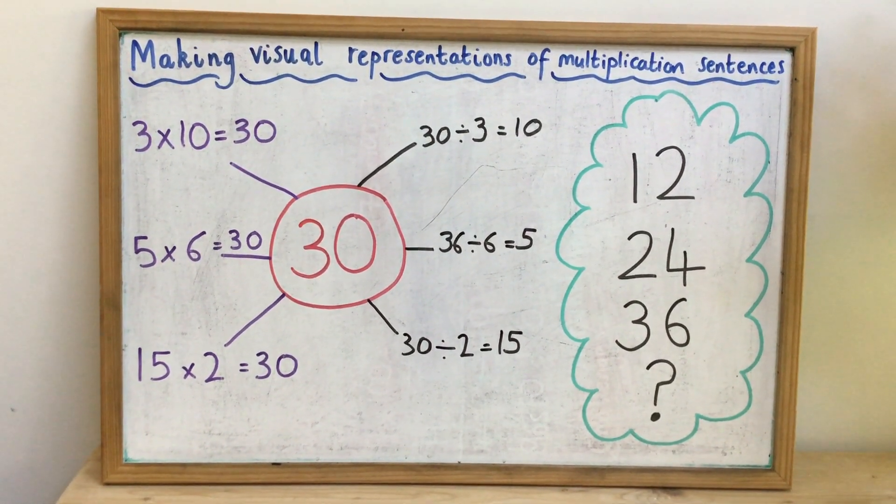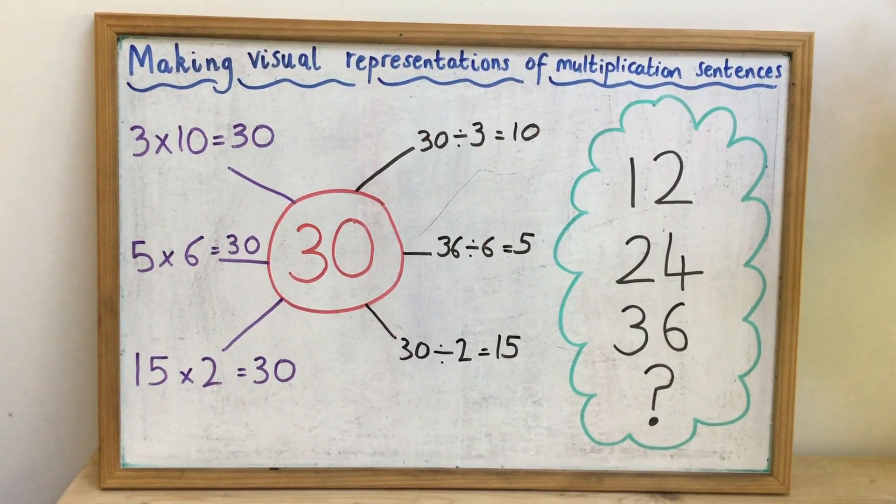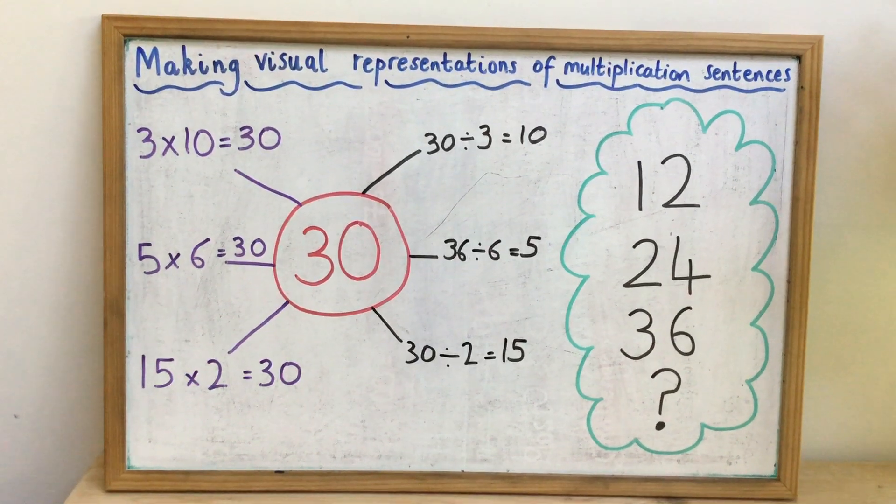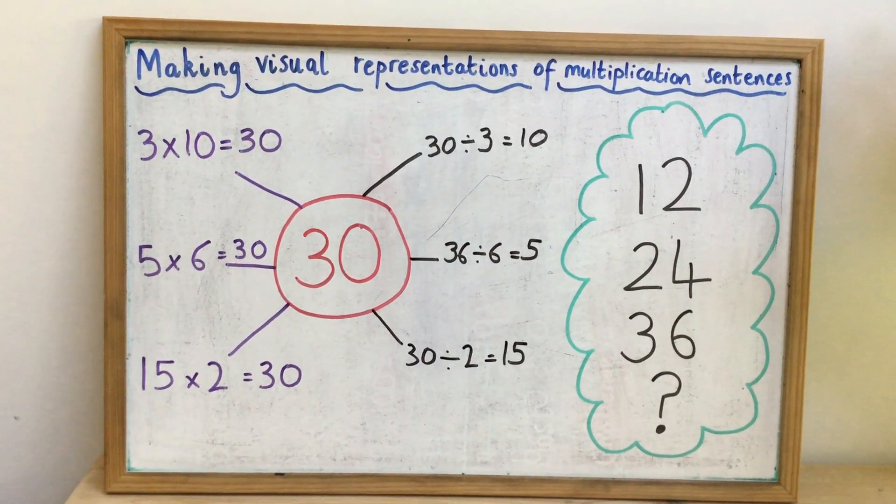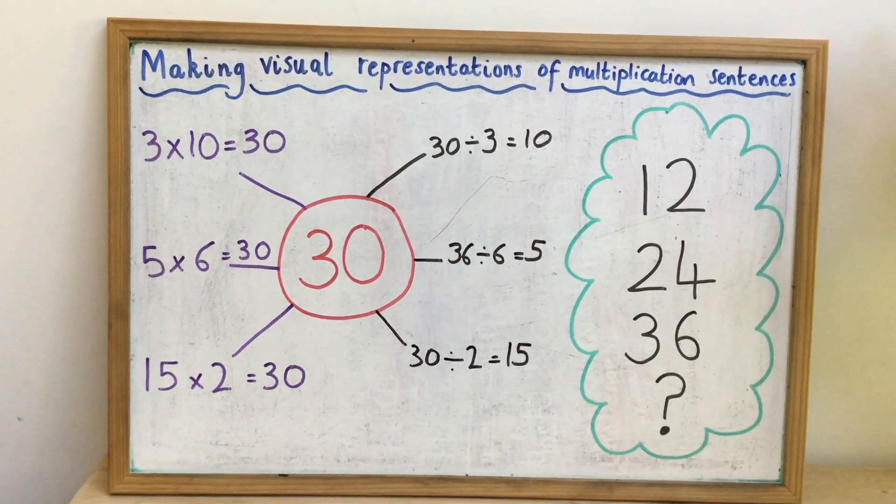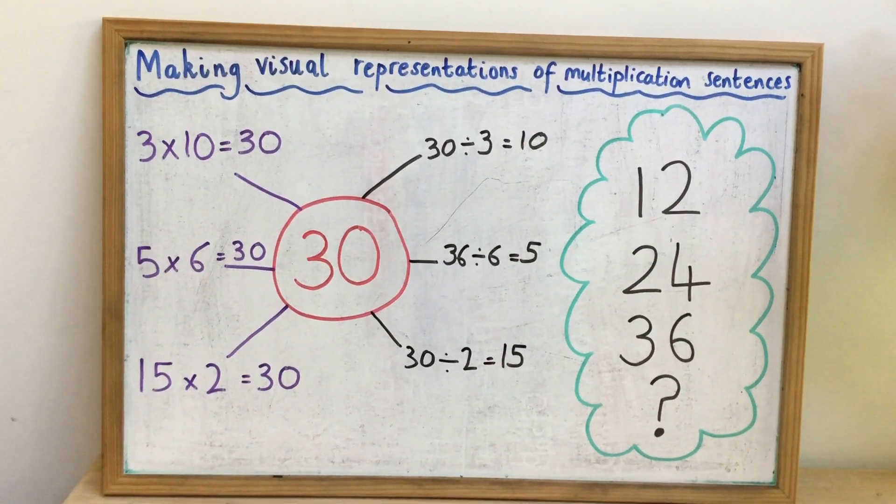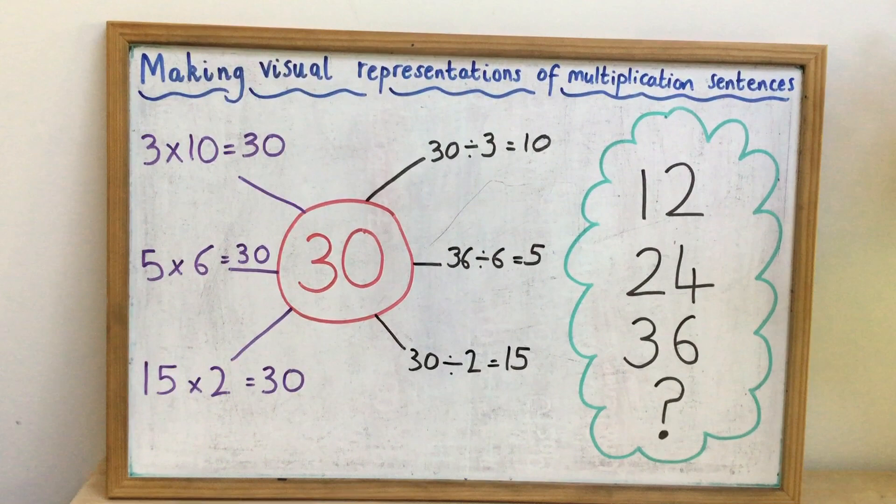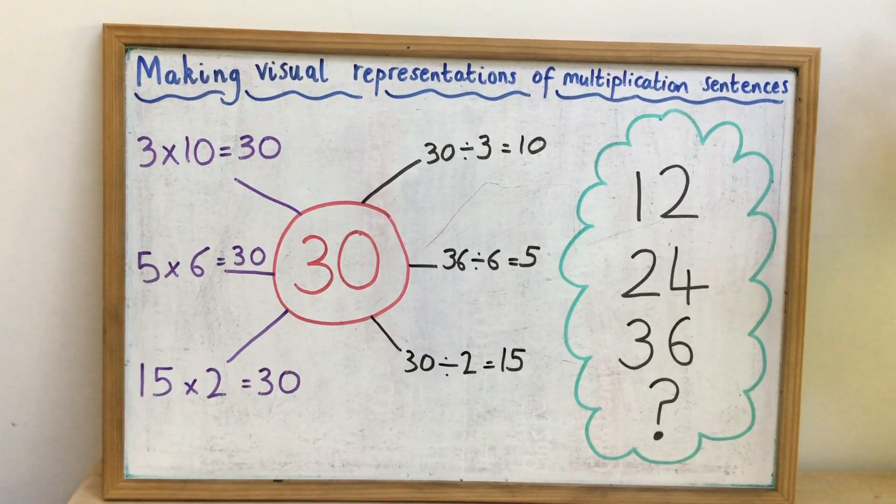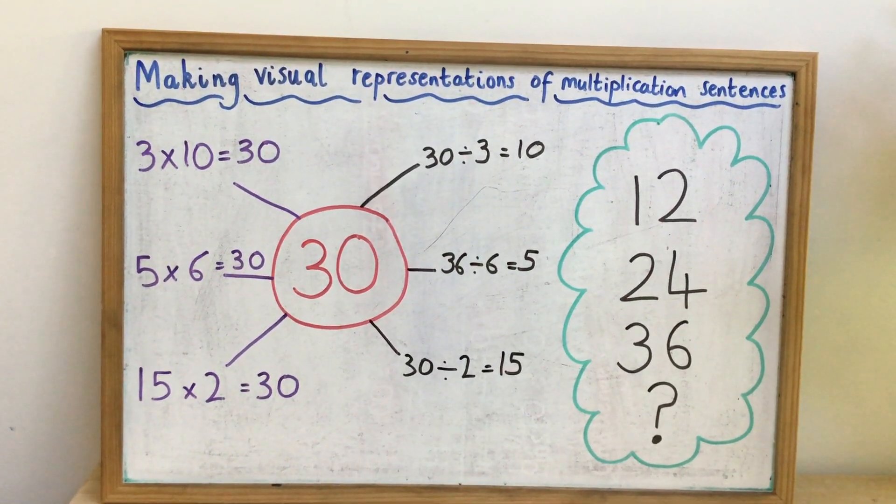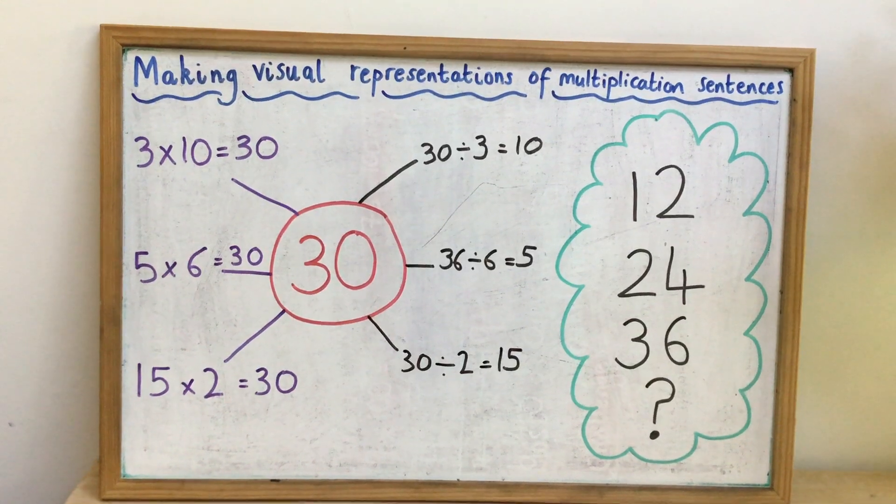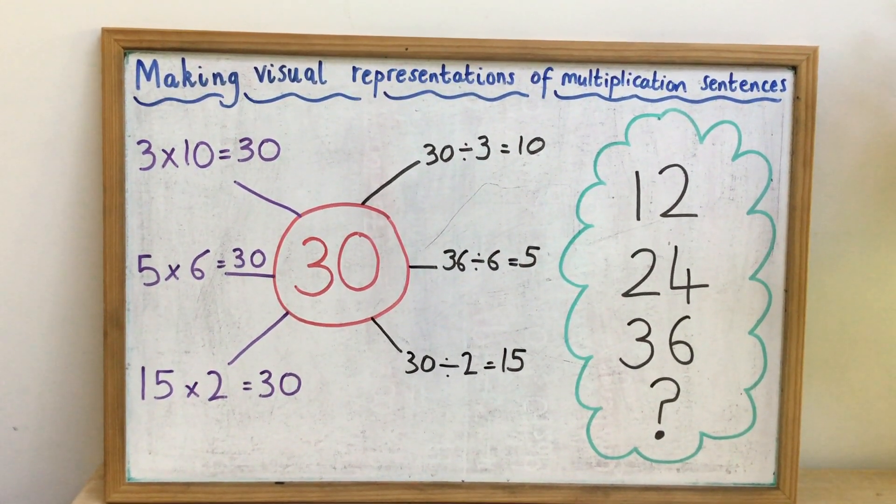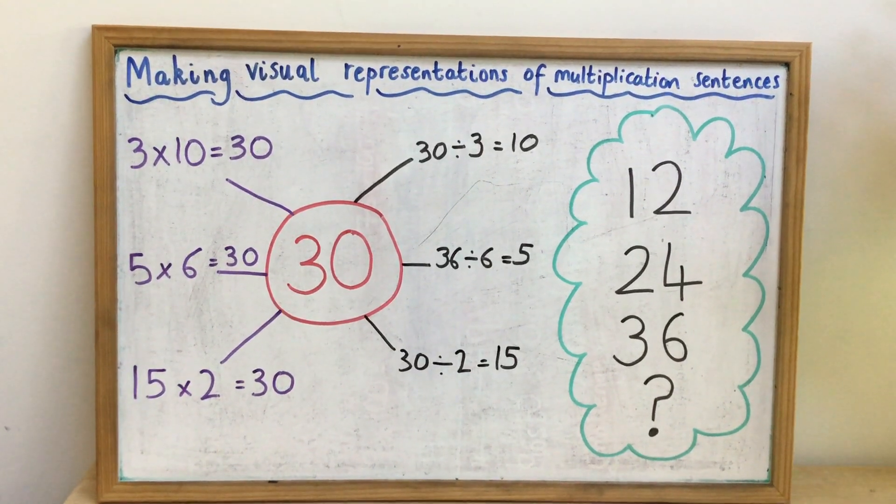And I thought, ah, I know that 30 is in the 3 and the 10 times table. So I know that 3 times 10 gives me 30. I also know that 30 is in the 5 and the 6 times table. So I know that 5 times 6 is 30. And I know that 30 is in the 2 times table and the 15 times table. And that 15 times 2 also equals 30.